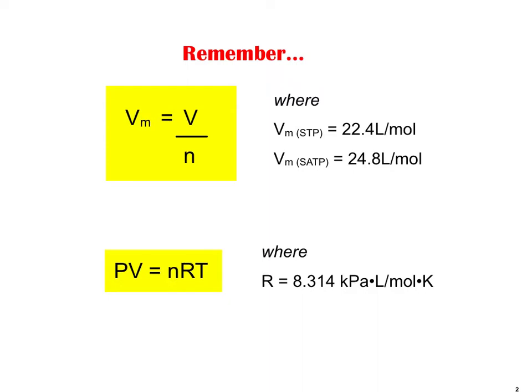Also PV equals nRT. When all else fails, you can use PV equals nRT instead of V molar. It's just a little bit extra work. R is 8.314 kilopascals per liter per mole Kelvin, and all of the units of P, V, n, and T have to be kPa, liters, moles, and Kelvin respectively.